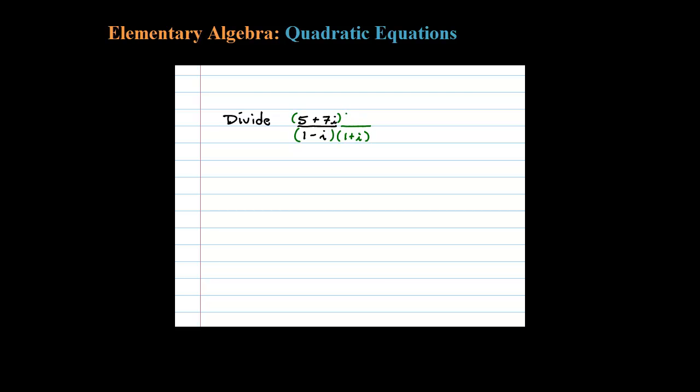Remember, whatever you multiply the denominator by, you have to multiply the numerator by the exact same thing. So multiplying by the conjugate here, in the numerator I have to distribute that, which leaves me with 5 plus 5i plus 7i plus 7i squared.